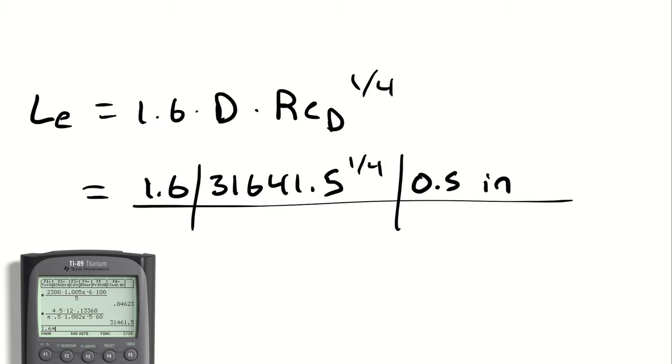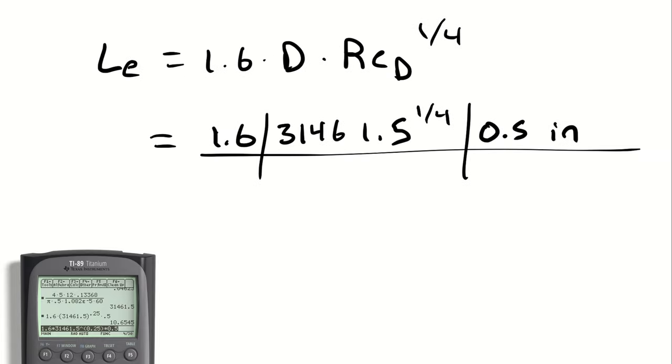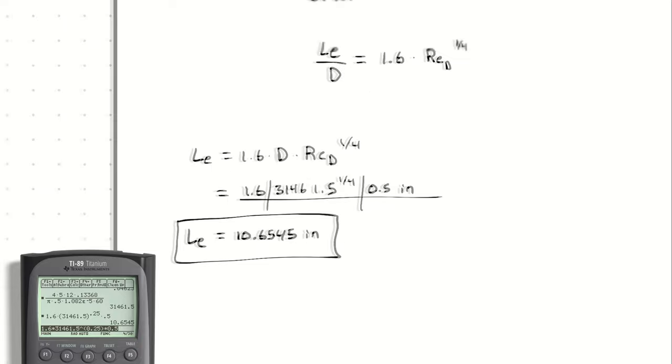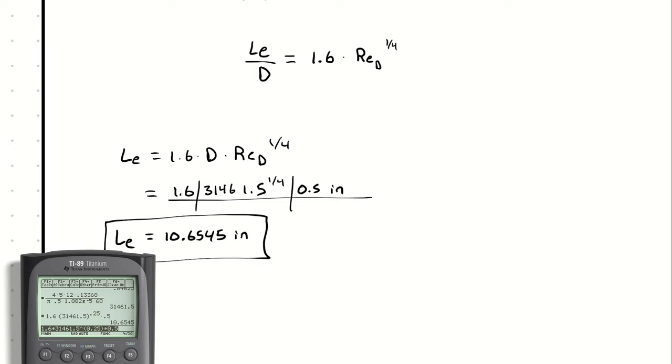So 1.6 times 31641.5, excuse me, 31461.5 raised to the 0.25 power times 0.5 yields 10.6545. So my entrance length is about 10 and 5 eighths inches.